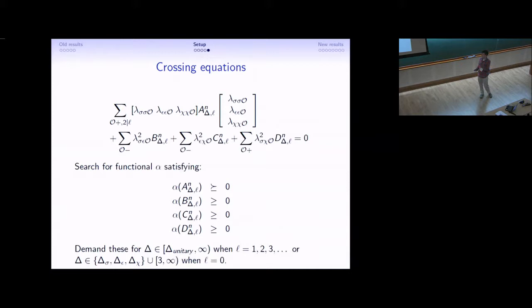The bootstrap is all about searching for functionals that act on these vectors in a desired way. When n runs from 1 to 12, we have to remember that these are components that depend on u and v. To really search for functionals numerically, we can't have an infinite dimensional problem. We need to do some Taylor expansion, so that they don't depend on u and v anymore. Then, these original vectors of 12 components become vectors with hundreds or thousands of components.